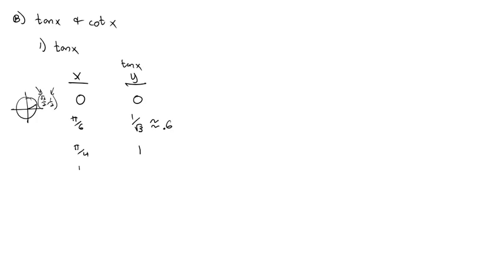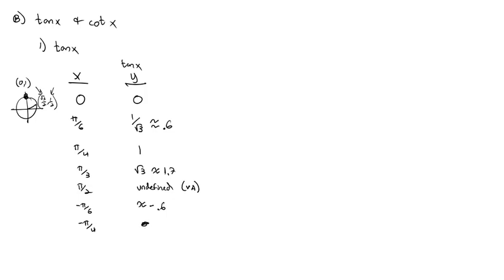At x = π/2, the unit circle gives (0,1), making tangent = 1/0, which is undefined — giving us a vertical asymptote. For the negative side: at -π/6, y ≈ -0.6; at -π/4, y = -1; at -π/3, y ≈ -1.7; and -π/2 is also undefined, giving another vertical asymptote.